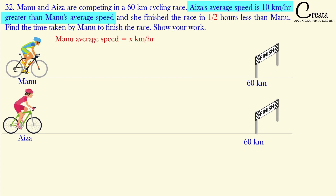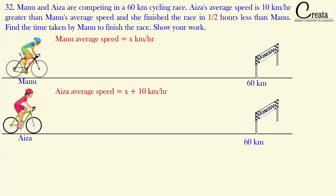Aiza's average speed is 10 kilometers per hour greater than Manu's average speed, so Aiza's average speed will be equal to x plus 10, where x is the average speed of Manu.